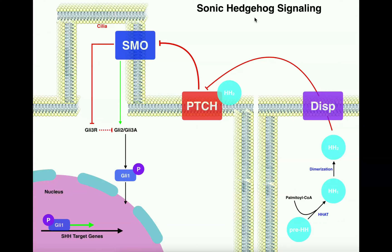There are actually three kinds of these, although we're going to mainly focus on one of them. They all function in basically the same way through the same signaling pathway. Those are sonic hedgehog — yes, it's named after the character from Sega — and there are also two others that are related homologues called Indian hedgehog and desert hedgehog. We'll mainly focus on sonic hedgehog, but they all function very similarly.